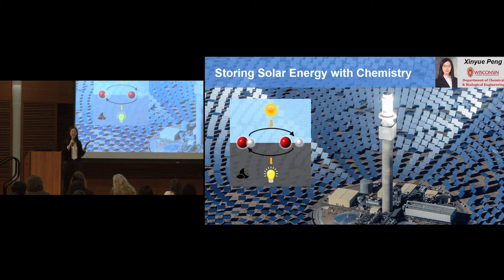Second, the sun shines more at deserts than cities like Madison. So we need to store and transport the energy from one place to another.